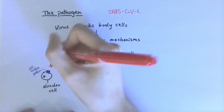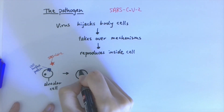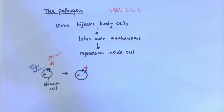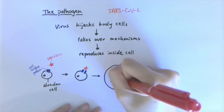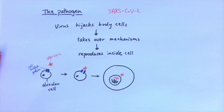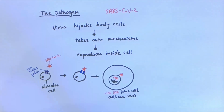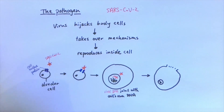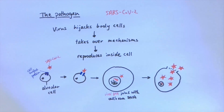To go into a bit more detail, the virus enters the cell through an enzyme found on our cell surface and incorporates its viral RNA with our own DNA. So when the DNA is used to make our own proteins, the viral proteins are also made at the same time, using up our own resources and energy in the process.